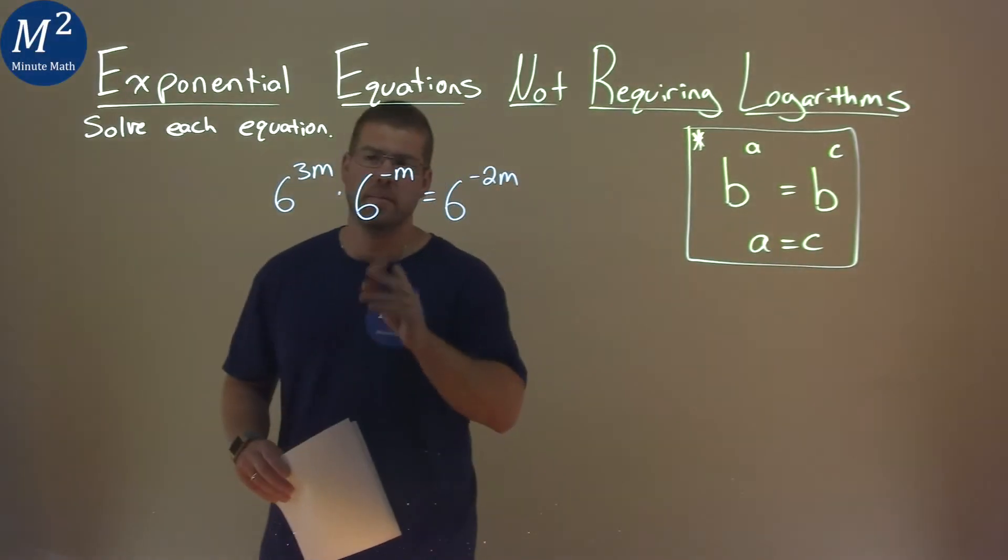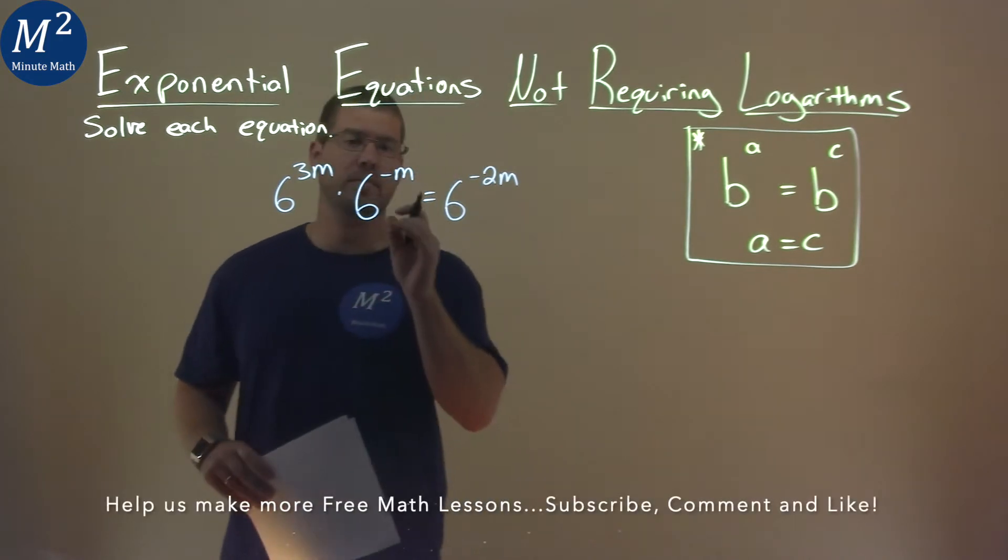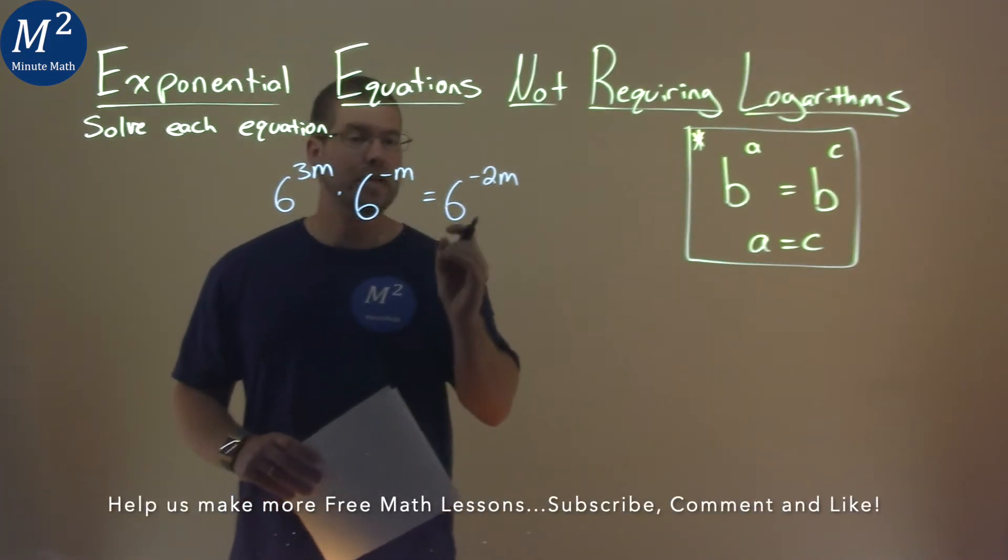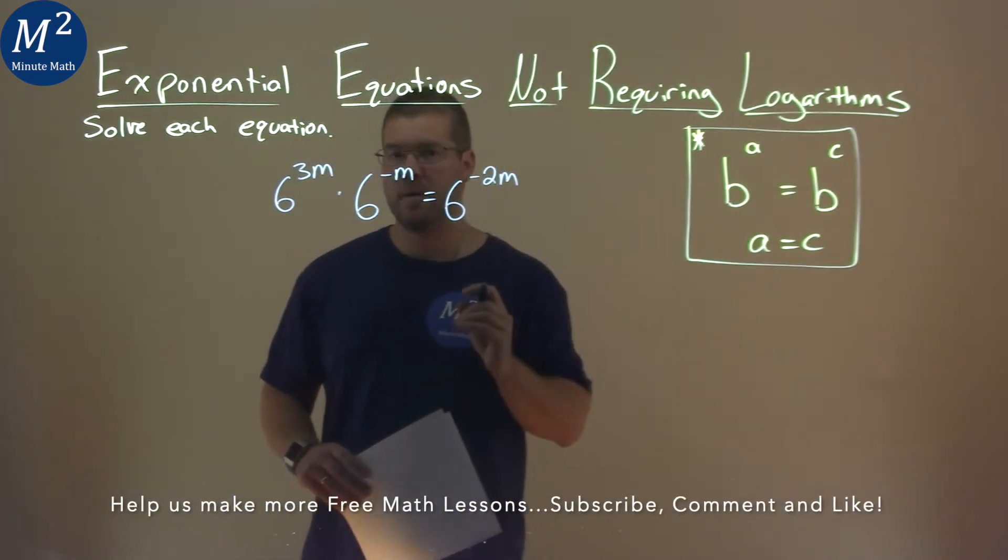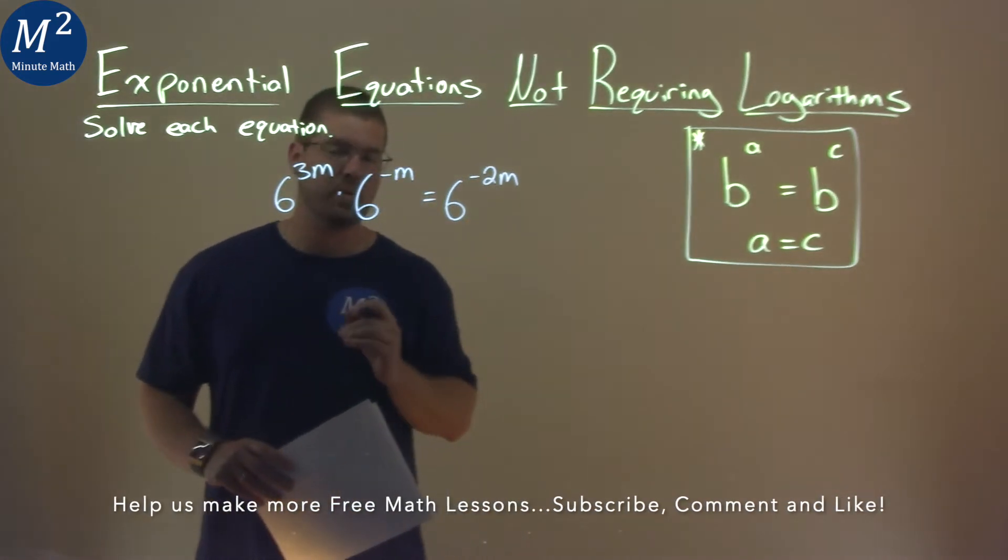We're given this problem right here: 6 to the 3m power times 6 to the negative m power equals 6 to the negative 2m power, and we need to solve this equation.